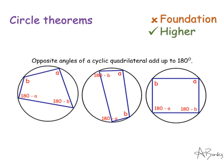Another circle theorem is that the opposite angles of a cyclic quadrilateral add up to 180 degrees. A cyclic quadrilateral is any quadrilateral where all of the vertices touch the circumference of a circle. A common mistake students make is thinking the opposite angles are equal — they're not, they add up to 180.